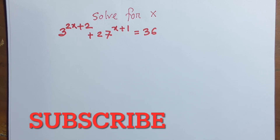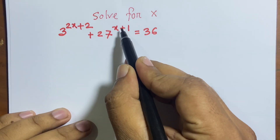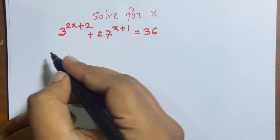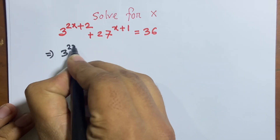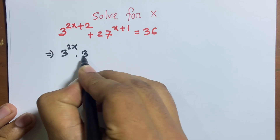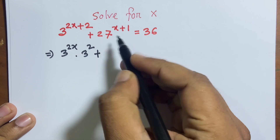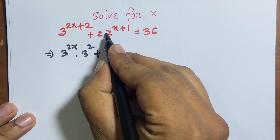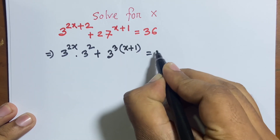Hello everyone, today I solve this problem: solve for x. 3 to the power (2x+2) plus 27 to the power (x+1) is equal to 36. First of all, I rewrite 3 power 2x times 3 squared, plus 27 to the power x plus 1, equal to 36. We can see that 3 cubed equals 27.